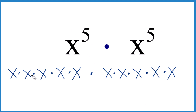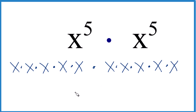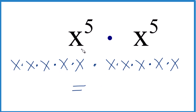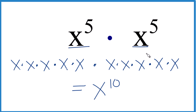If you count these up — one, two, three, four, five, six, seven, eight, nine, ten — you'll notice we get x to the fifth times x to the fifth is x to the tenth. Since we only had x's, we could just add these exponents together to get our answer: x to the tenth.